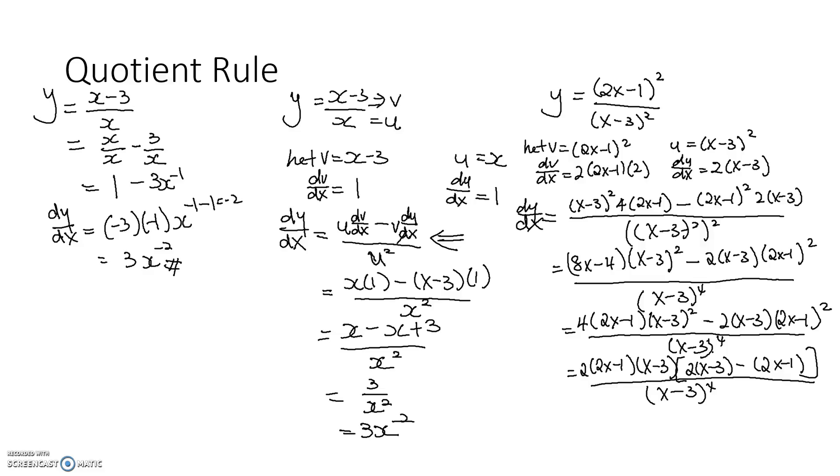So, actually, when you get this, you can open, you can further simplify. 2x minus 1, x minus 3. This will become 2x minus 2x, you get 0, minus 6, plus 1, minus 5, over here. Just basically opening up the brackets. And you get minus 10, 2x minus 1, x minus 3, over x minus 3 to the power of 4.